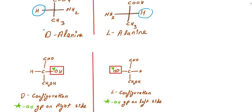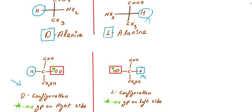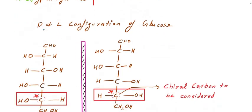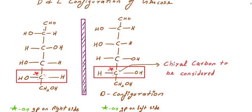So in the D configuration, H is on the left side and glyceraldehyde reference is on the left side — this is D. Similarly, in the L configuration, H is on the right side and glyceraldehyde is on the left side — L configuration is the left side. These are the naming rules. Glucose configuration and amino acids follow this same system.